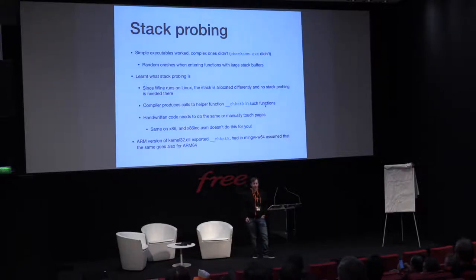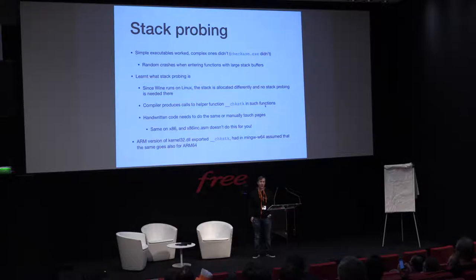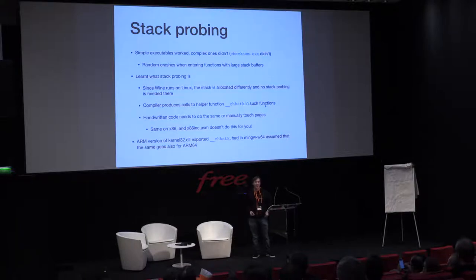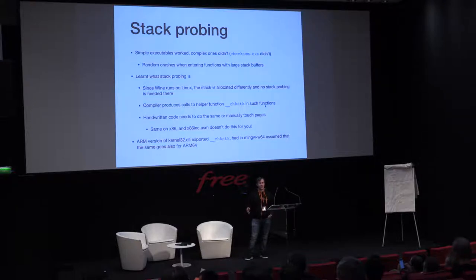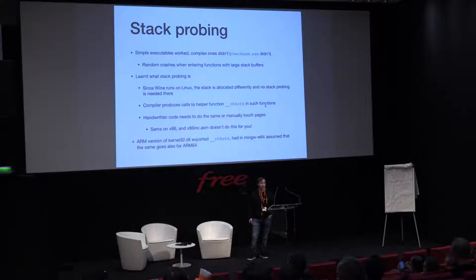The helper function — the `__chkstk` function — for 32-bit ARM was exported from kernel32.dll, so I didn't need to implement the helper myself for that case. Initially, before actually having a device, I assumed that if it's available for 32-bit ARM, it's surely there for 64-bit ARM as well. But on the real device, of course it wasn't. So I had to hold the patch for MinGW for a couple of months until I could actually talk about this.